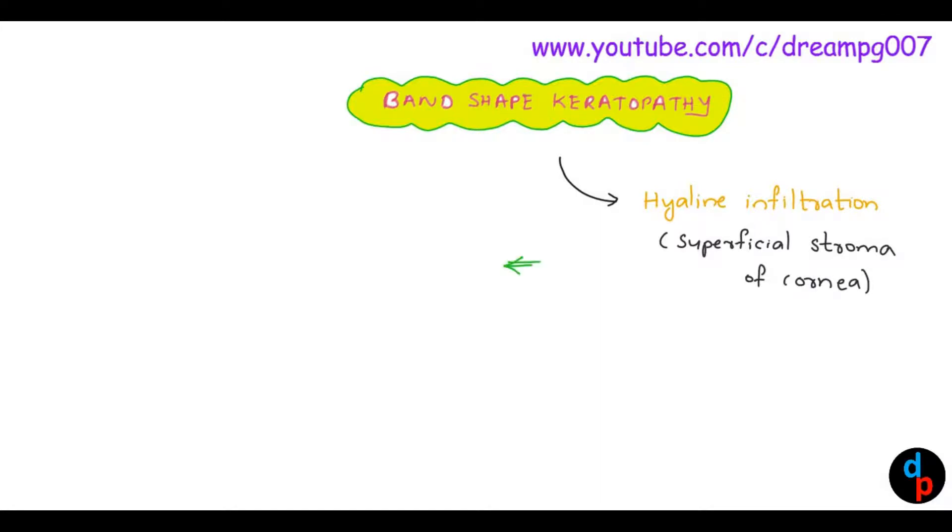We will look into the layers of cornea. The outermost layer is the epithelium, below which we can see the Bowman's membrane. Between the Bowman's membrane and the Descemet's membrane we can see the stroma. The innermost layer of the cornea is the endothelium.